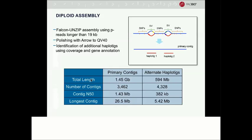We performed a Falcon Unzip assembly using P-reads longer than 19 kilobases to assemble into contigs. We polished with the Arrow consensus algorithm and, through analysis of coverage and gene annotation, identified additional haplotigs to obtain a final genome assembly. The total length of the primary contigs is 1.45 gigabases, with an additional half gigabase of alternative haplotig sequence. Our assembly contains about 3,400 primary contigs, and half of the genome is contained in contigs longer than 1.43 megabases. Our longest contig is over 26 megabases. We also have more than 4,000 alternative haplotigs with an N50 of 382 kb and the longest alternative haplotig being more than 5 megabases long.